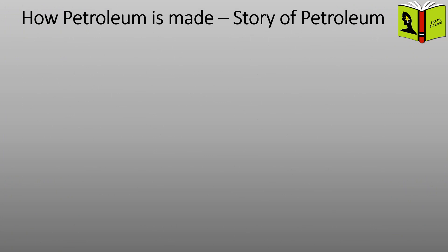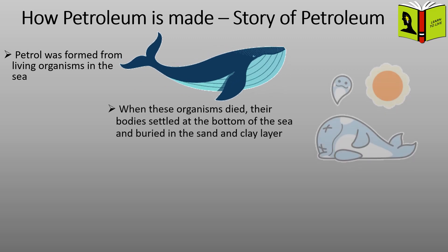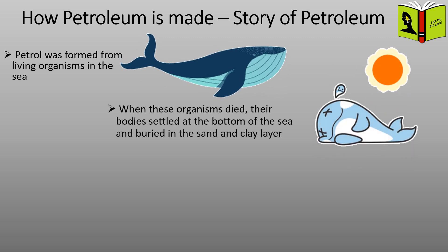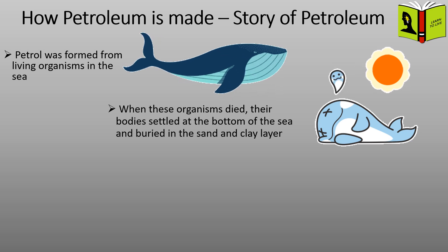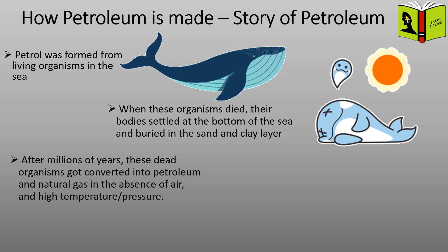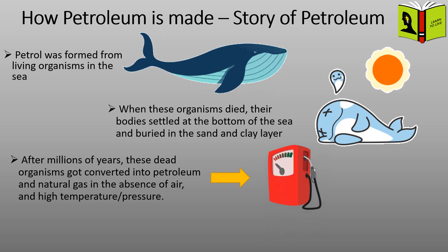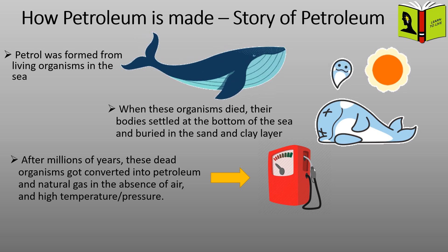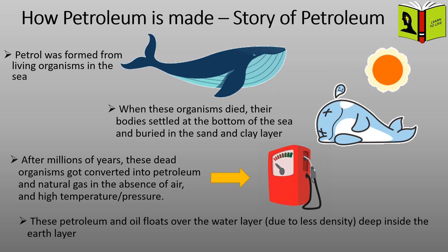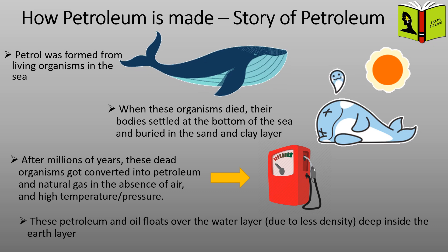How petroleum is made — the story of petroleum. Petroleum was formed from living organisms in the sea. When these organisms died, their bodies settled at the bottom of the sea and were buried in sand and clay layers. After millions of years, these dead organisms got converted into petroleum and natural gas in the absence of air, under high temperature and pressure. This petroleum and oil floats over the water layer due to less density, deep inside the earth's layers.